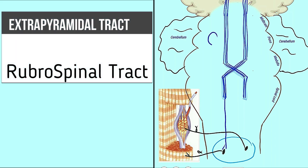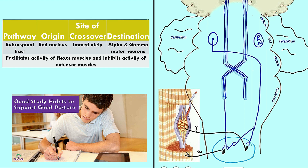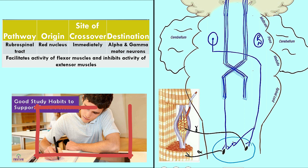The rubrospinal tract: the nucleus is the red nucleus present in the midbrain. A neuron comes out, crosses to the opposite side, and descends to the ventral grey horn, where it synapses with the gamma motor neuron and the alpha motor neuron. The rubrospinal tract has connections with the corticospinal tract at all levels of the spinal cord segments. Its activity facilitates the flexors of the body and inhibits the extensors — meaning we are in a functional, relaxed, flexed posture. The majority of functions we perform in daily life involve this posture.